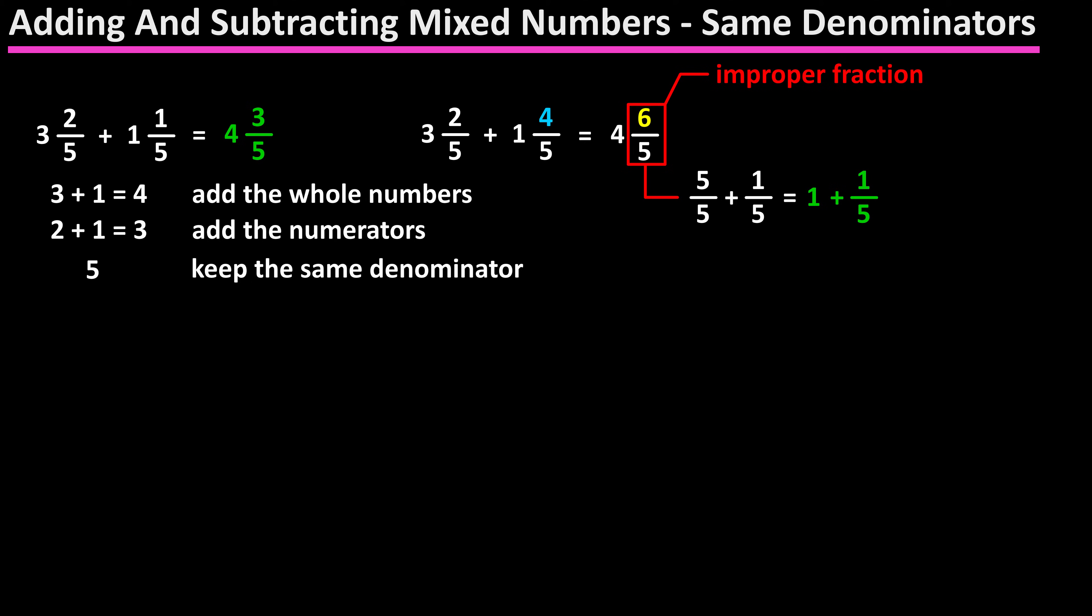6 over 5 becomes 5 over 5 plus 1 over 5, 5 over 5 is equal to 1, which we can then add to the whole number of 4, and our final answer is 5 and 1 over 5.